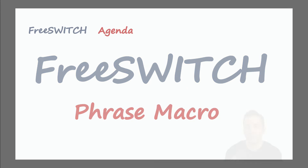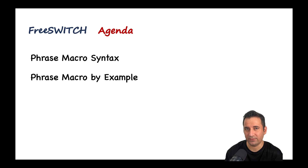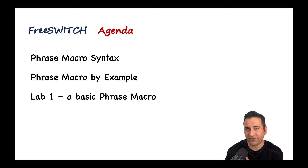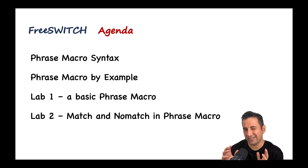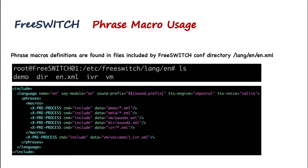In this video we will learn how to use the phrase macro system in FreeSWITCH. We will start by introducing phrase macro system syntax and learn it by exploring the default FreeSWITCH phrase example. We will have two labs: in the first we will create a basic phrase macro, and in the second we will extend the first example to learn how to work with input parameters in the phrase macro.